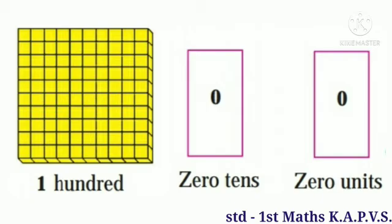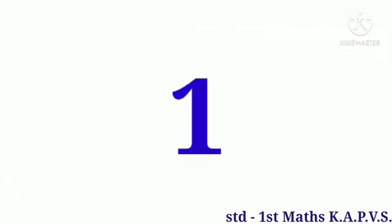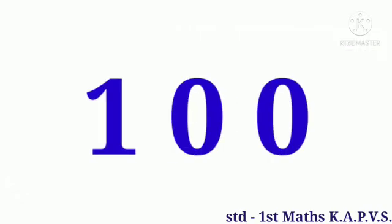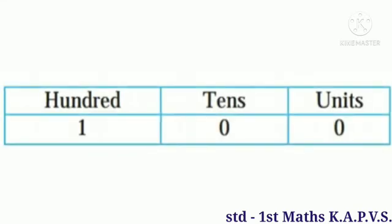Now, 100 is written as 1-0-0. There are 0 units in the units place, 0 tens in the tens place, and 1 in the hundreds place.